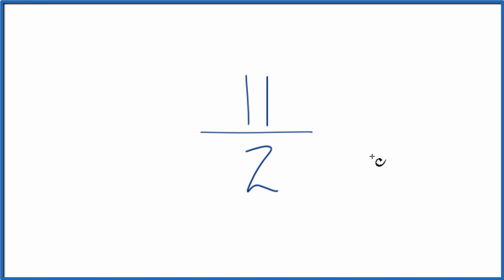So we need to find a common factor, something that goes into 11 and 2. The thing is, the only thing that goes into 11 and 2 is 1. And if we divide 11 by 1 and 2 by 1, we still end up with 11 halves.